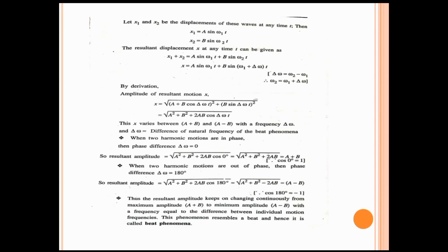When two harmonic motions are in phase, the phase difference Δω·t = 0. Substituting Δω·t = 0 into the equation, the resultant amplitude equals A + B. When two harmonic motions are out of phase, the phase difference Δω·t = 180°. Substituting this value, the resultant amplitude equals A − B.